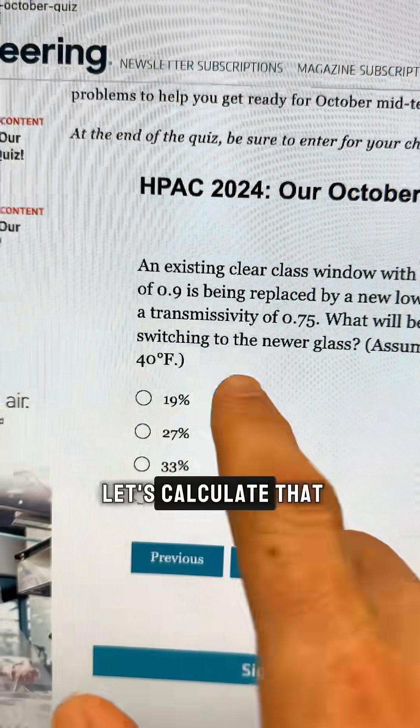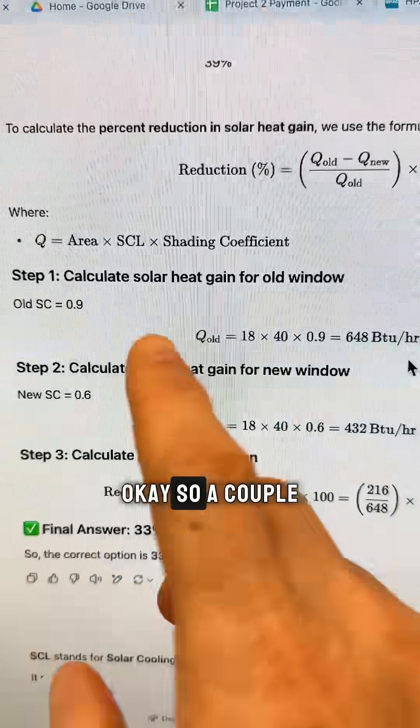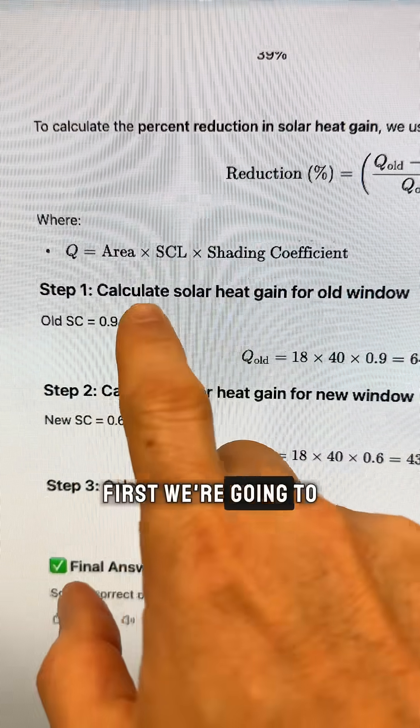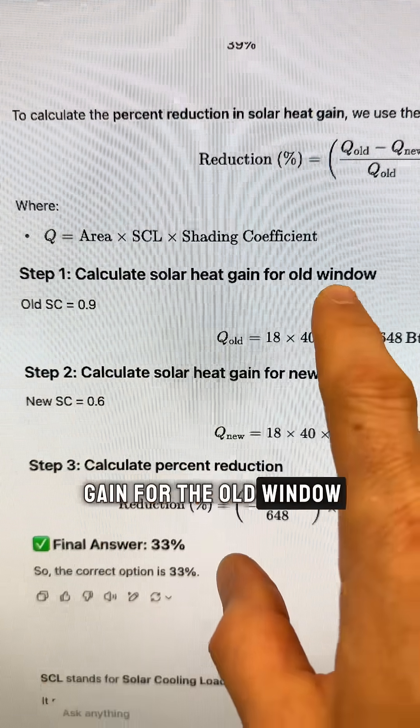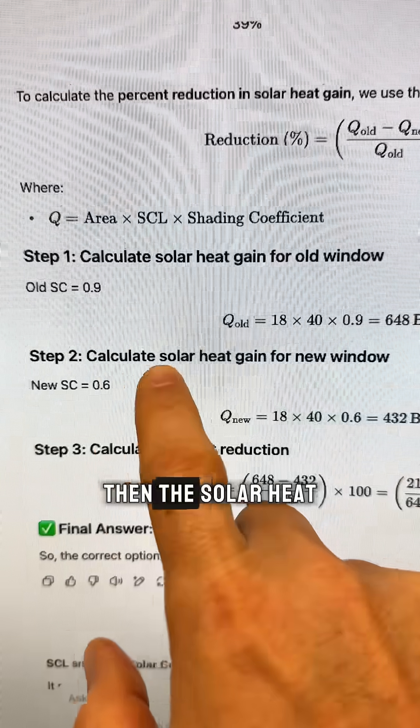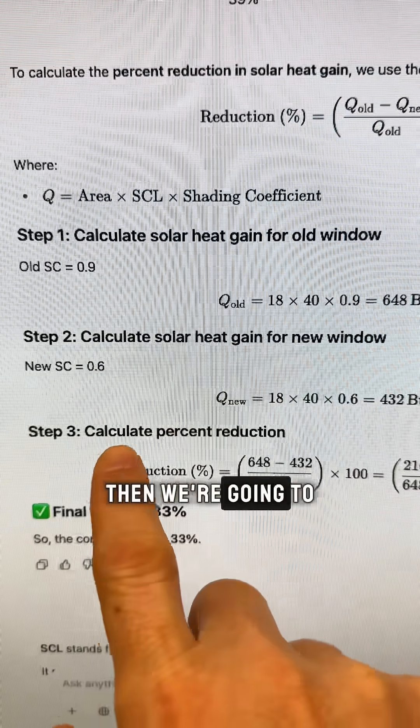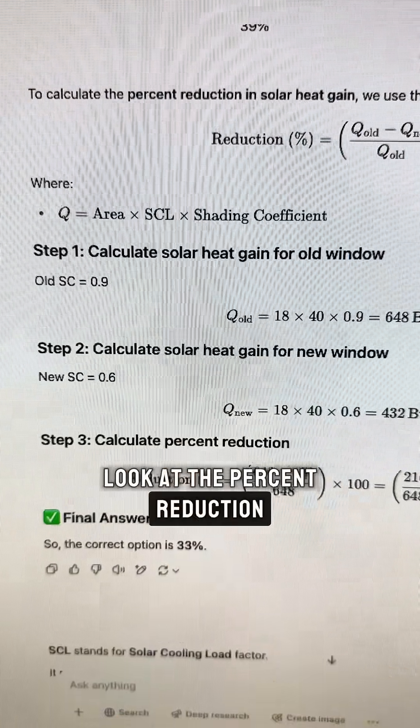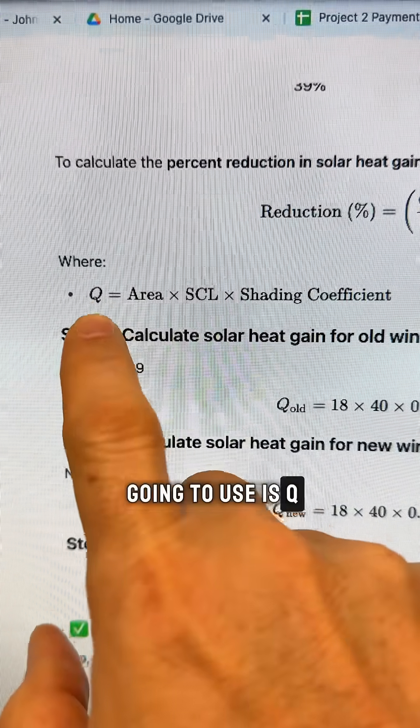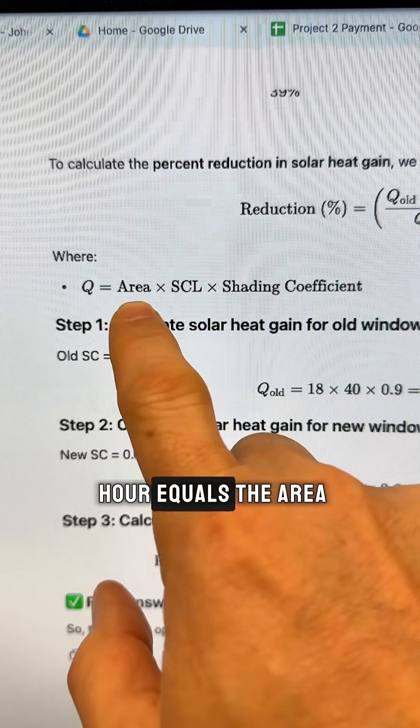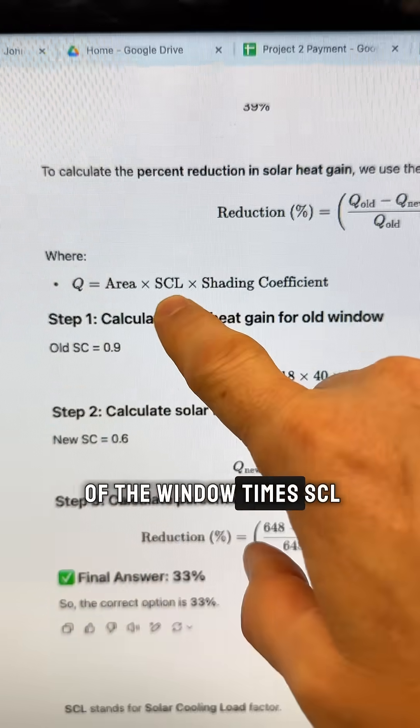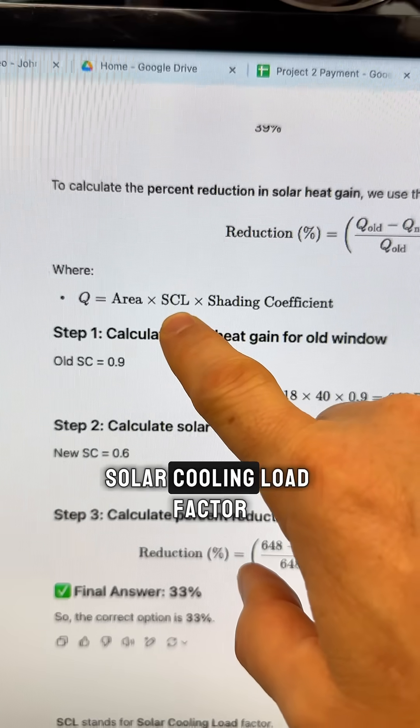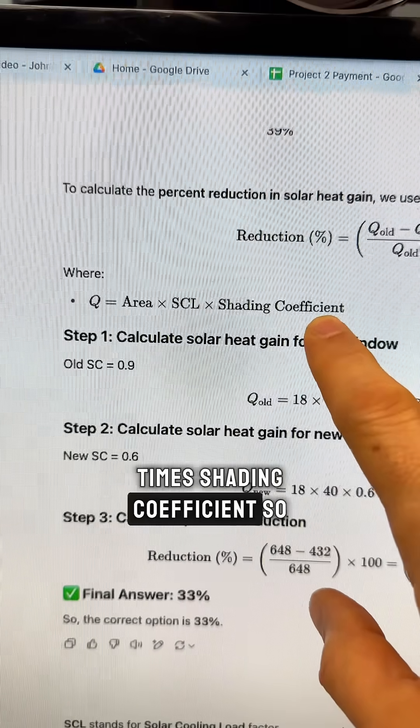So what's the answer? Let's calculate that. Okay, so a couple steps here. First, we're going to calculate the solar heat gain for the old window, then the solar heat gain for the new window, then we're going to look at the percent reduction. So the equation we're going to use is Q, which is BTUs per hour, equals the area of the window times SCL, solar cooling load factor, times shading coefficient.